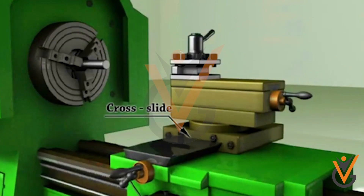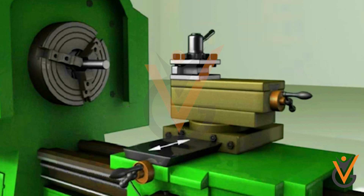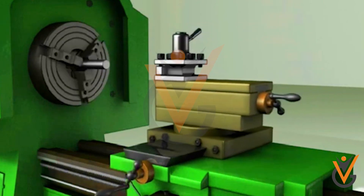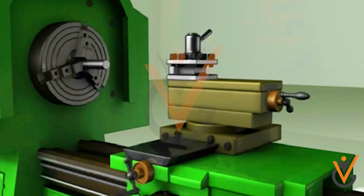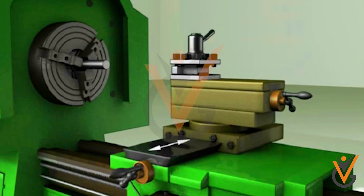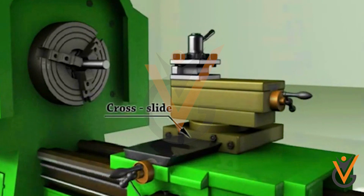Cross slide is provided with a female dovetail on one side and assembled on the top of the saddle with its male dovetail. The top surface of the cross slide is provided with T-slots to enable fixing of a rear tool post or coolant attachment. The carriage basically provides a manual or automatic cross movement for the cutting tool.